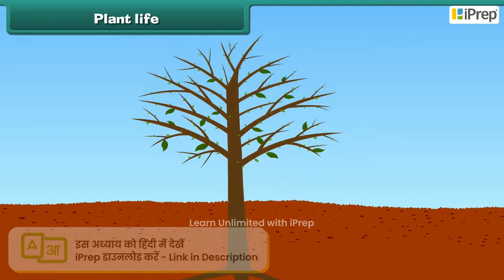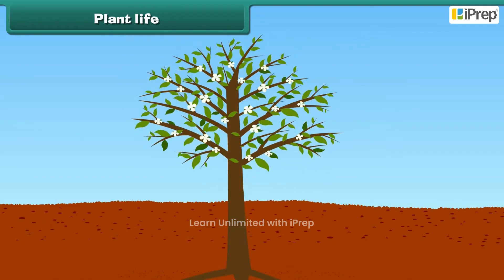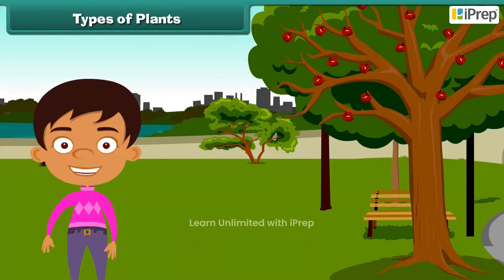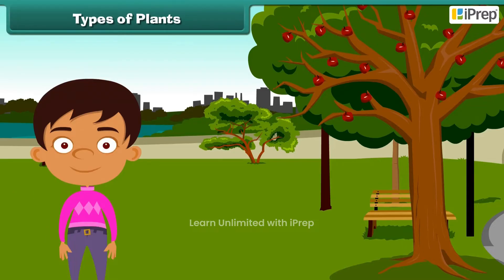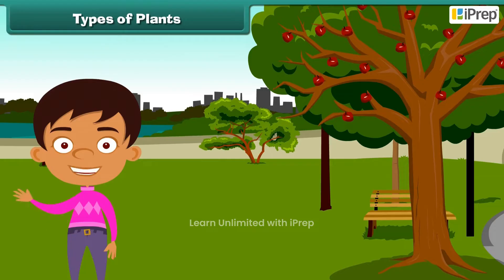Plants are also living, like us. They need their own food and water to live and grow. They also have the ability to grow and become tall. We often see different types of plants around us — some plants are tall while some are small.